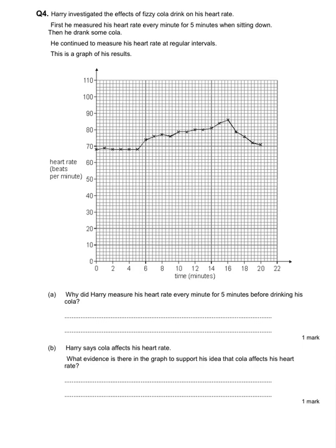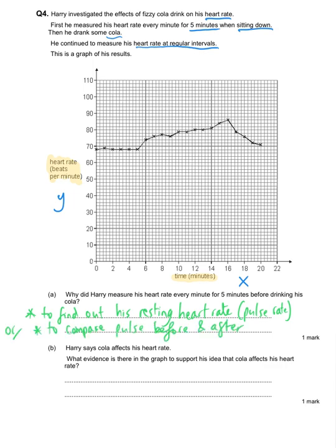This next question looks at the effect of a cola drink on a student's heart rate. He's measuring his heart rate first for five minutes when he's sitting down, then he's drinking some cola, and then he's measuring his heart rate at regular intervals after he's had the drink. We've got the time on the x-axis and the heart rate in beats per minute on the y-axis. The first question says why did Harry measure his heart rate every minute for five minutes before drinking the cola? The idea is that he needs to know what his resting pulse rate is. You could also have said that he needs to be able to compare his pulse rate before and after drinking the cola, or simply he would know if the pulse rate had changed.